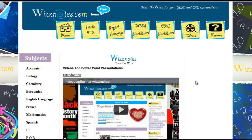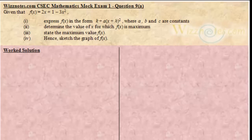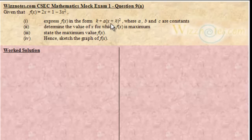Welcome to wisenotes.com mathematics video tutorials. We are looking at the solution for question 9a, which reads: given that f of x equals 2x plus 1 minus 2x squared, first we are to express f of x in the form k plus a into x plus h squared, where a, b and c are constants, then we are to determine the value of x for which f of x is maximum, then we are to state the maximum value of f of x and hence sketch the graph of f of x.